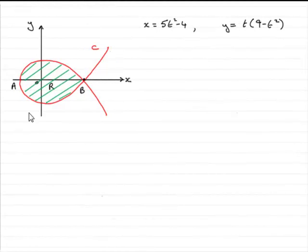Now for the first part, we've got to find the x coordinates of A and B for the curve C. And to do that, all we need to do is set y equal to 0.